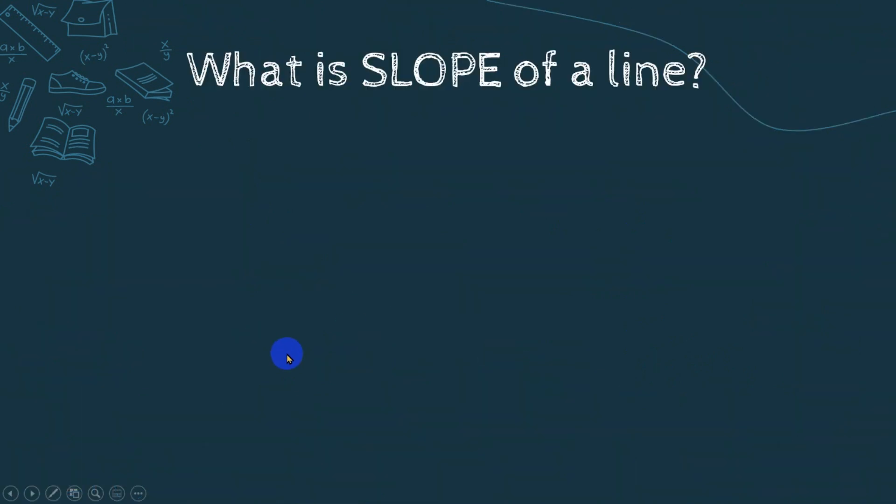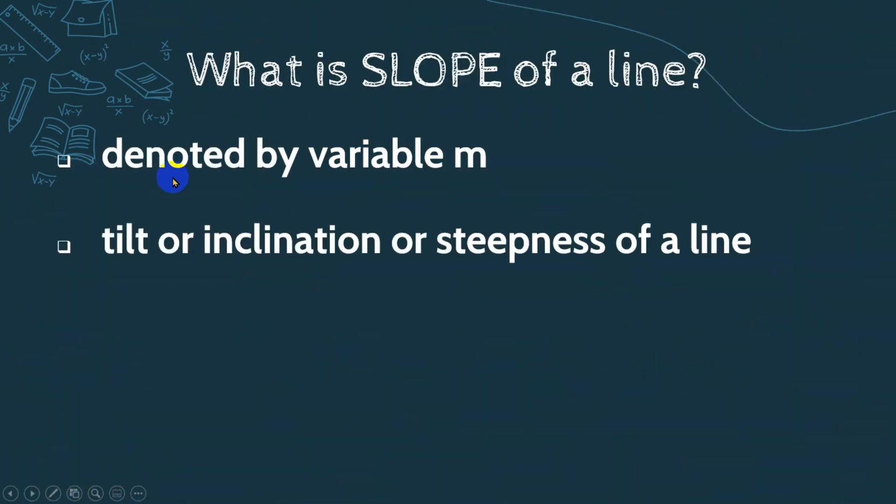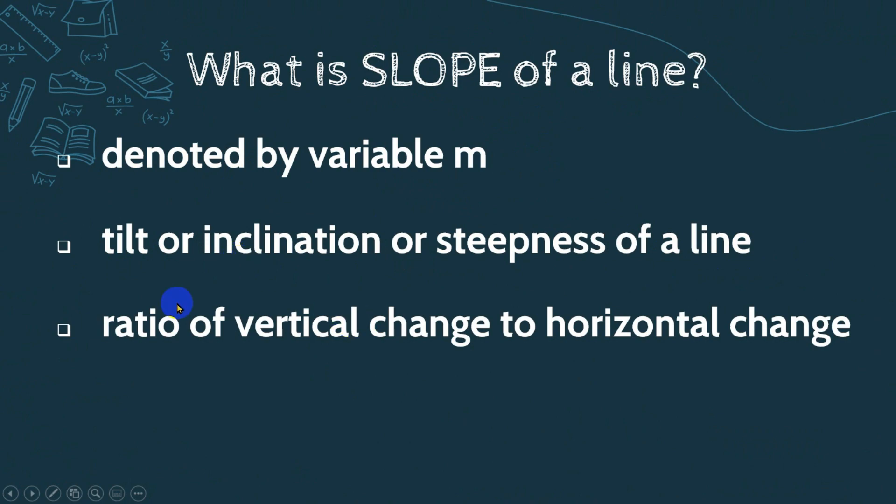It is denoted by or represented by variable m. It is the tilt or inclination or steepness of a line.